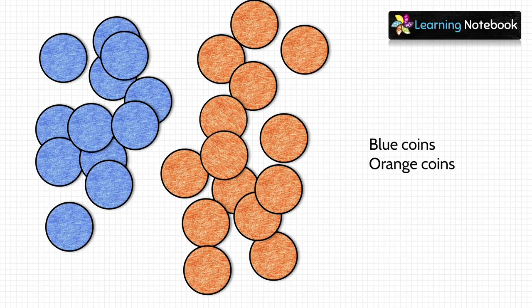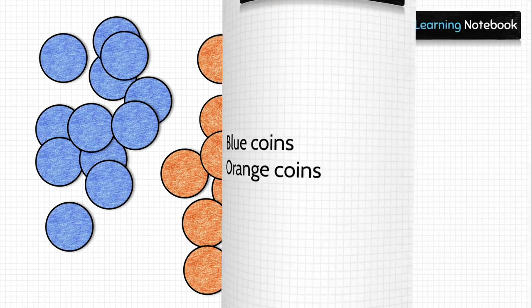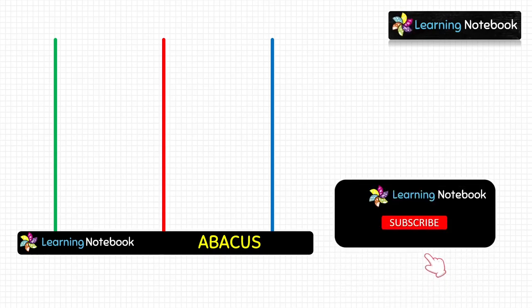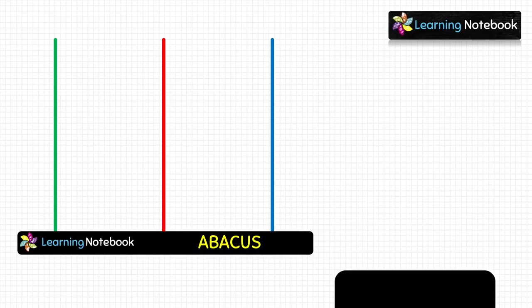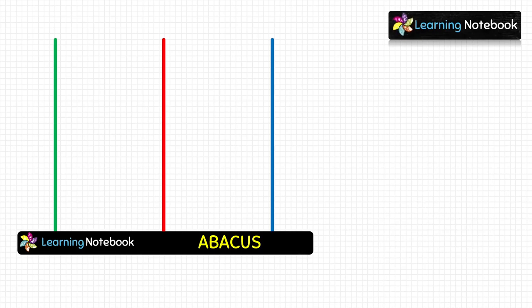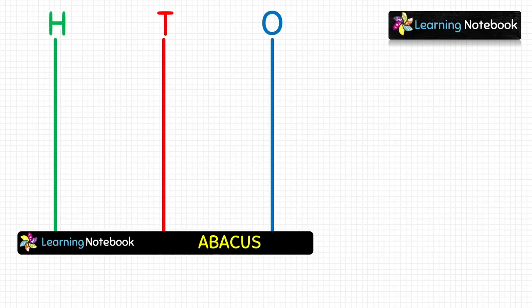In the same way, let's make a few more coins which are blue on one side and orange on the other side. Now I have made an abacus on paper — you can also easily make this abacus with a few sketch pens. As you can see, this abacus has three spikes: the blue spike stands for ones place (O), the red spike stands for tens place (T), and the green spike stands for hundreds place (H).